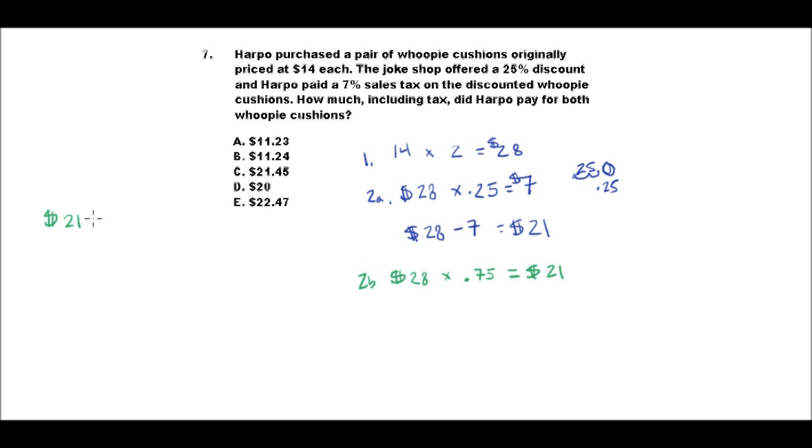Alright, so 21 times, we could do 21 times .07. I'm going to call this step 3a. 21 times .07, and that's because 7%, if you take 7%, that's 7.0%, and you move the decimal over two places, you've got to add a zero here in order to move it over, and you get .07. So then you use .07 in your equation.